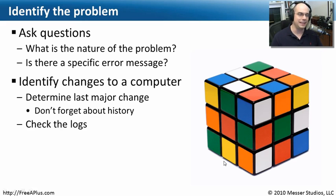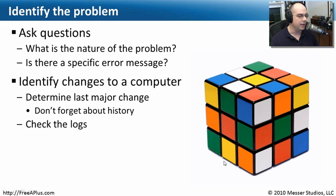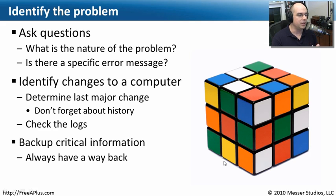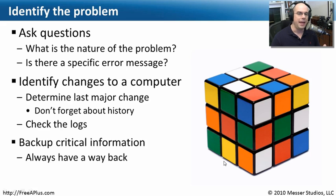Another important thing to consider is what's the last thing that changed. Was there an upgrade just before this problem started? Was a particular application installed? If someone just came in after the weekend, you may need to talk with the people who manage the network and configuration settings to find out if anything changed. Very often you can go right to the logs — you may not even need to ask the customer. You can look at the logs to determine if new software was installed or changes were made to the operating system. Throughout this process, you should already be thinking about having a backup, so the current system can be restored if needed.